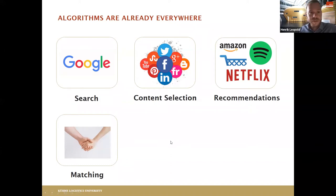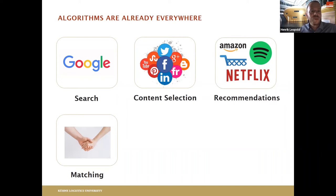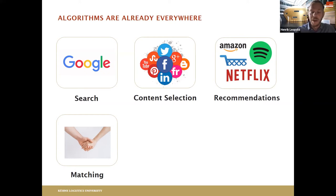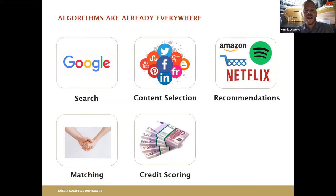Things go even further. If you go on an online dating platform, you are not matched with a random person — you enter hobbies, properties, and interests, and then people are presented to you that you might want to meet. So even whether you find a partner or not depends on algorithms, at least in the online setting.